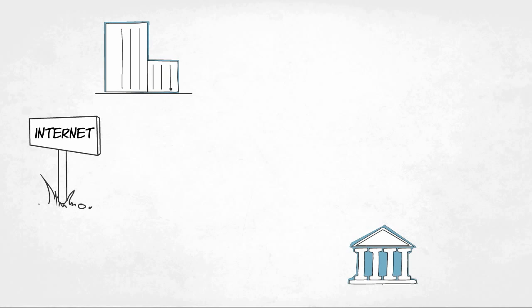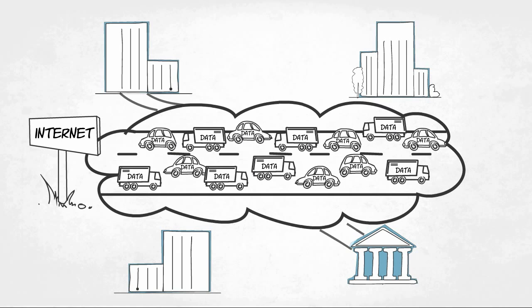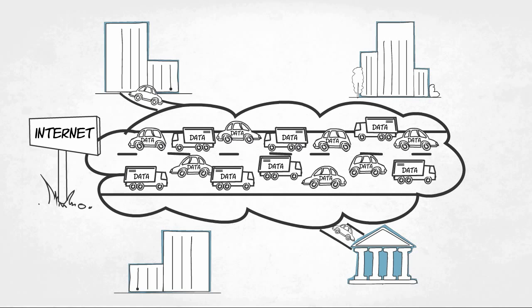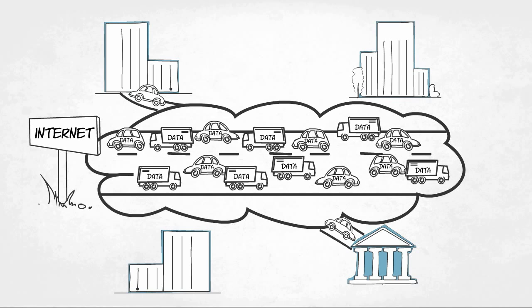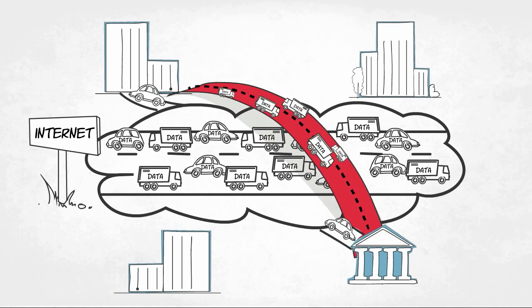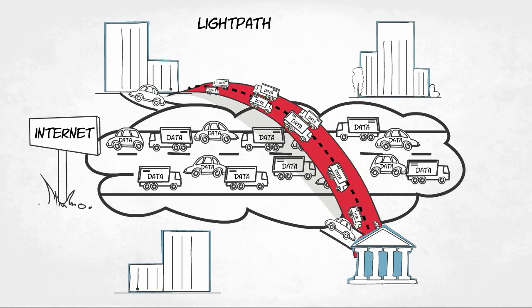The Internet isn't fast enough or secure enough for certain research projects or educational institutions. They need unlimited bandwidth and secure connections so that they can send data at high speed from A to B. This concept is referred to as a lightpath.